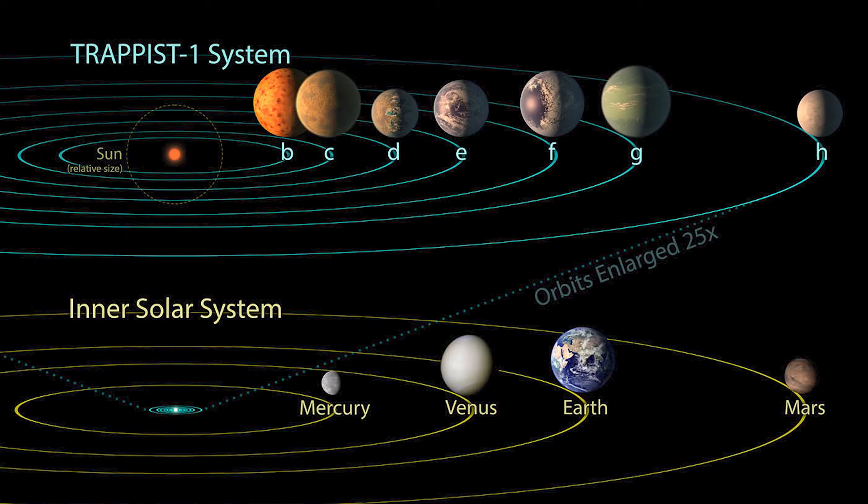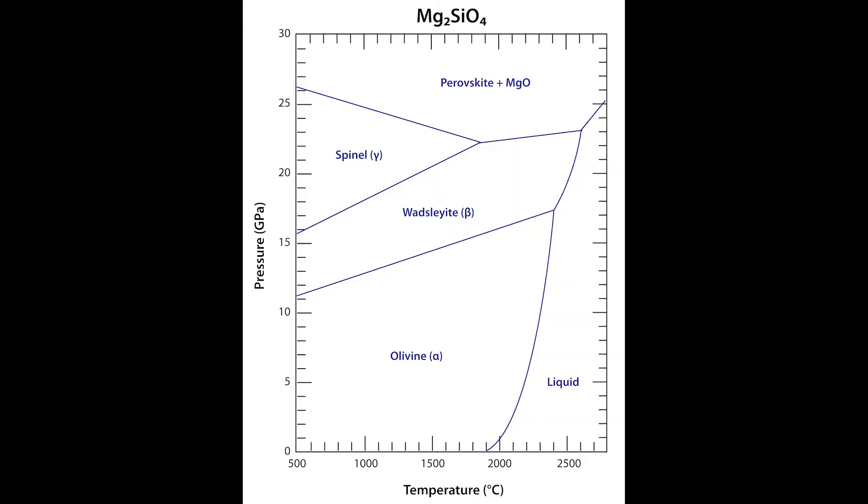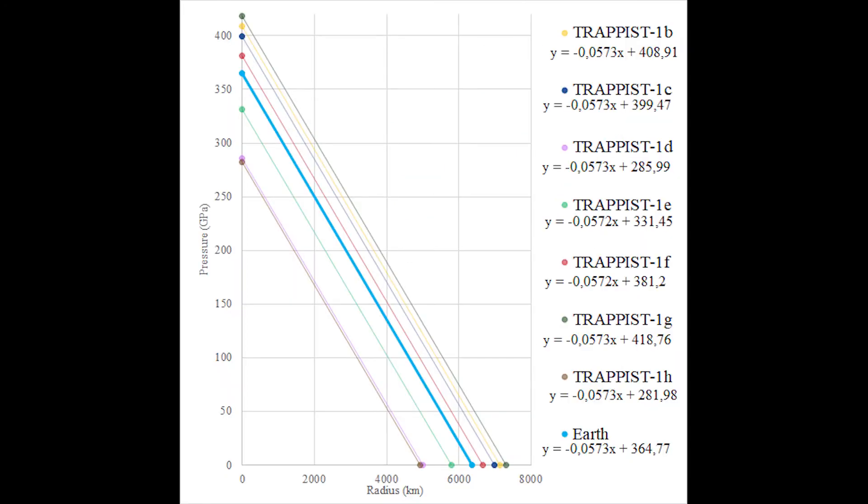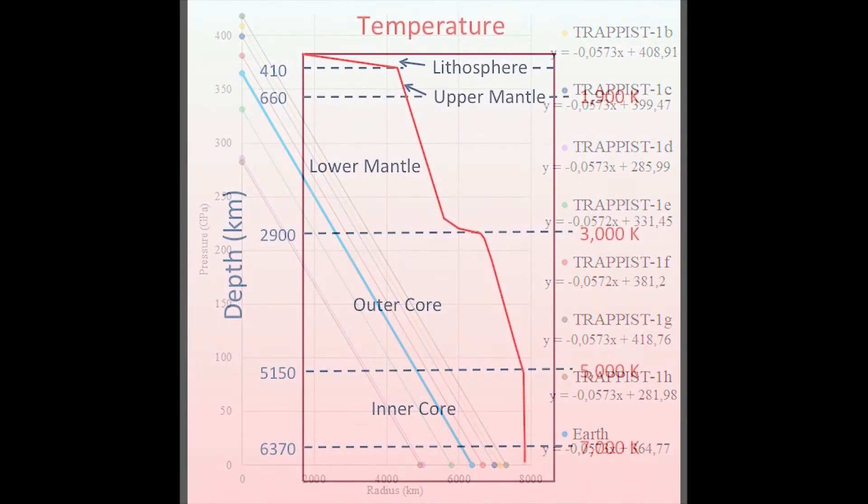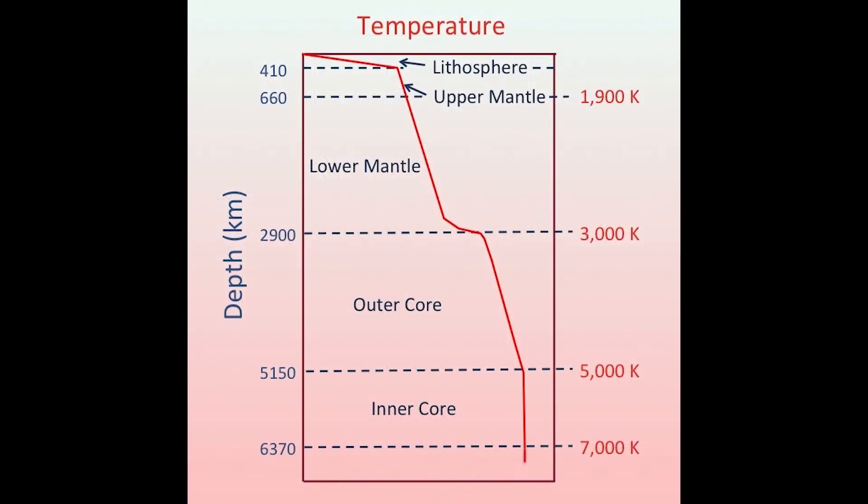To determine the interior composition of these TRAPPIST-1 planets, their pressure and temperature needs to be known at various radii. The formulas found for the different TRAPPIST-1 planets can be used to find the pressure at various radii. Furthermore, for the temperature, it is assumed it follows a similar gradient as the temperature here on Earth, once you go to various depths.